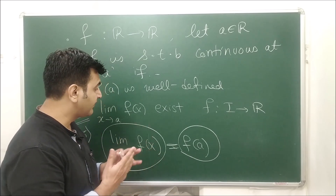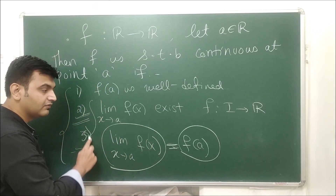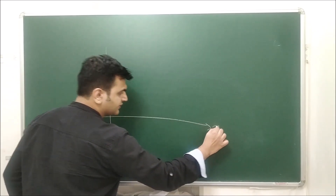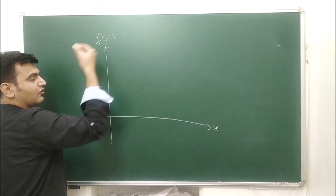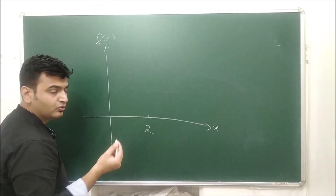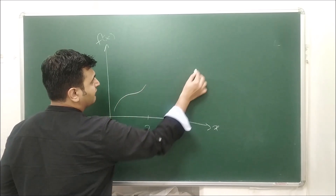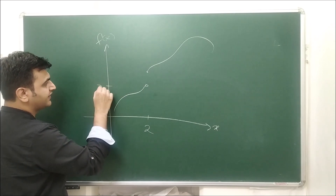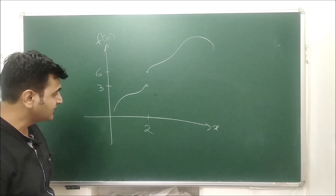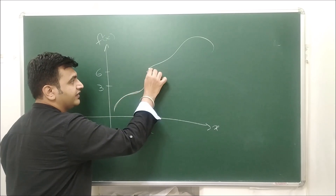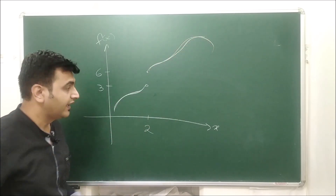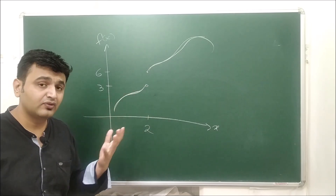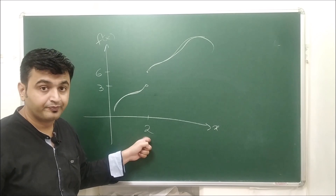Now let's take a graphical example to understand why we need all three conditions. Suppose you have the graph of some function — this is my X-axis and this is my f(X). Let a = 2, and suppose the graph looks like this: at x = 3 the value is 3, at x = 2 the value is 6, but there is a jump at x = 2. From the graph you can see the function is continuous elsewhere but not continuous at 2.